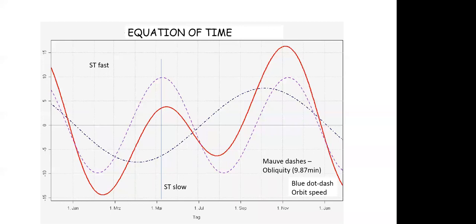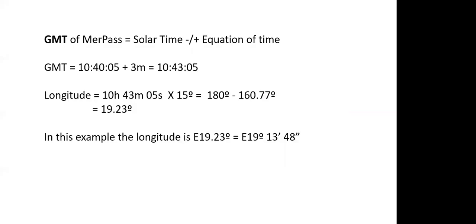Taking our example around May, we find the equation of time was about 3 minutes fast. We apply this correction: GMT of mer pass (solar time) 10h 40m 05s plus 3 minutes gives us 10h 43m 05s, which is our longitude expressed in hours, minutes, and seconds. To change it to degrees, multiply by 15, giving us a longitude of 19° 13' 48" east.